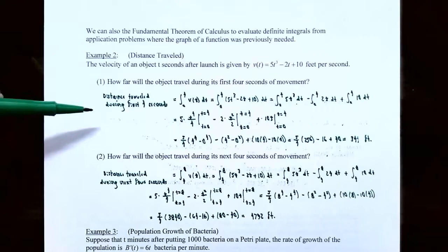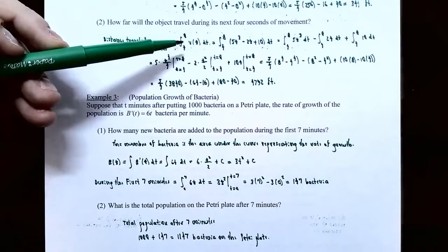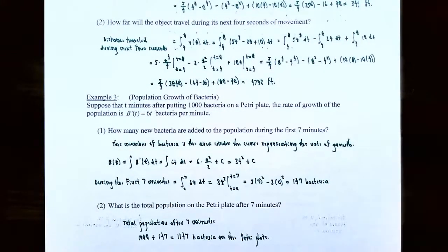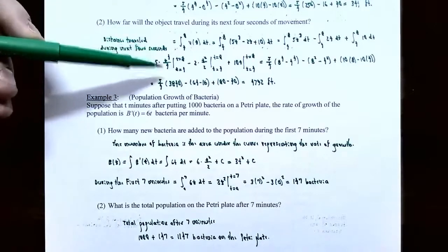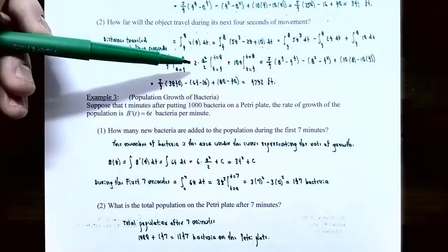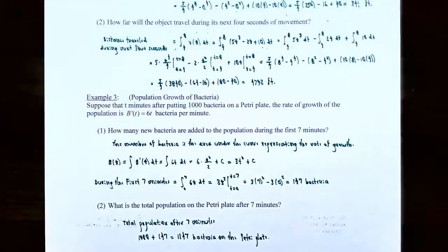Number two: how far will the object travel during the next four seconds? The next four seconds means starting at t equals 4 and going up to t equals 8. The distance is the definite integral from 4 to 8 of v of t dt — same function 5t cubed minus 2t plus 10 — separated into three integrals all from t equals 4 to t equals 8. The antiderivatives are the same: 5 fourths t to the fourth, t squared, and 10t, each evaluated at t equals 8 and t equals 4.